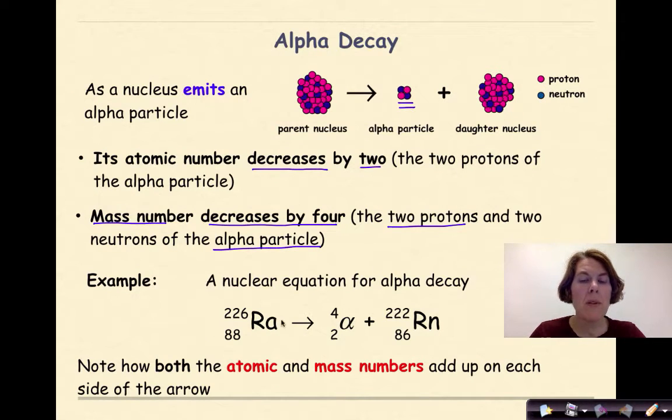Here's an example. We have Ra-226. It's undergoing alpha decay, and I know it's undergoing alpha decay because I see my alpha particle being released. I also have Rn-222, which is more stable than Ra-226. And Rn-222, while it's not a perfect one-to-one ratio of protons to neutrons by any stretch, it's closer than it was before in the original Ra-226.